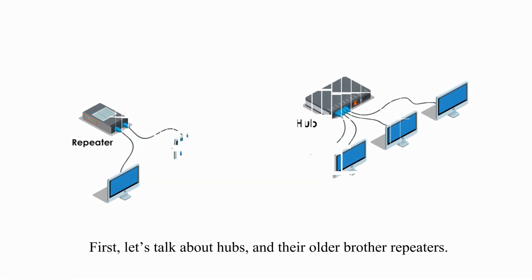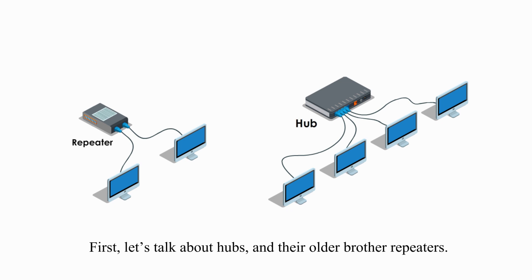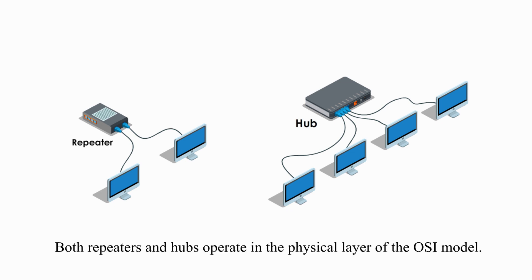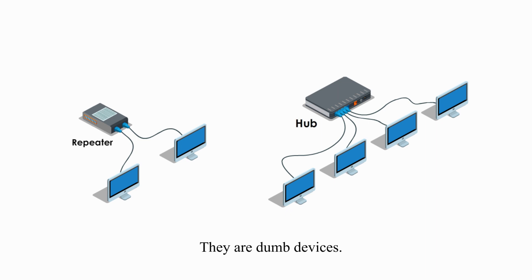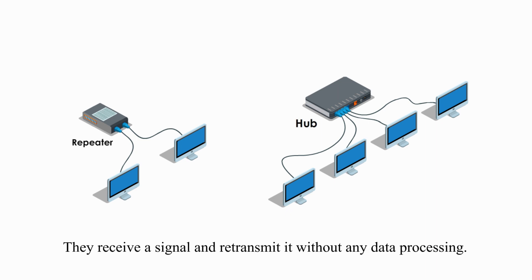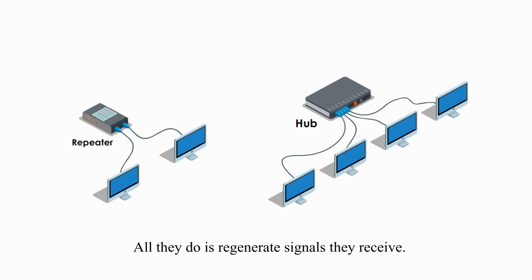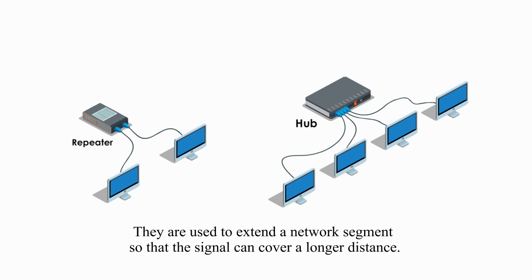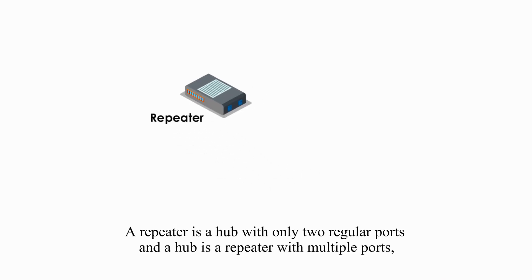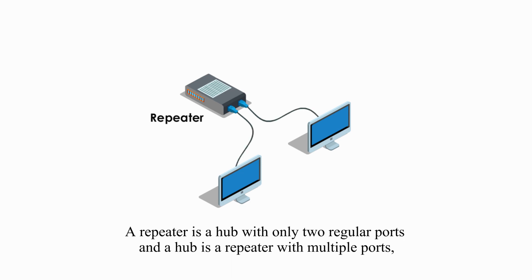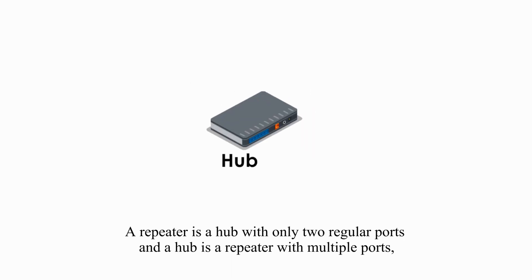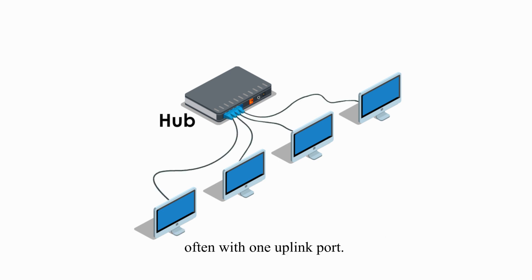First, let's talk about hubs and their older brother, repeaters. Both repeaters and hubs operate in the physical layer of the OSI model. They are dumb devices — they receive a signal and retransmit it without any data processing. All they do is regenerate signals they receive. They are used to extend a network segment so that the signal can cover a longer distance. A repeater is a hub with only two regular ports, and a hub is a repeater with multiple ports, often with an uplink port.